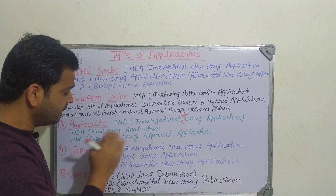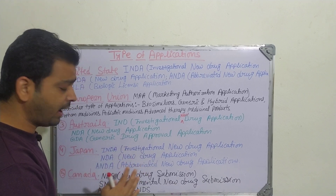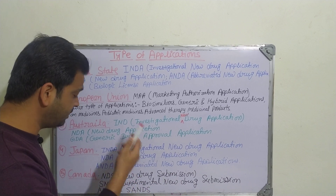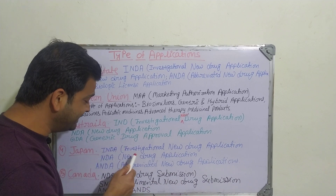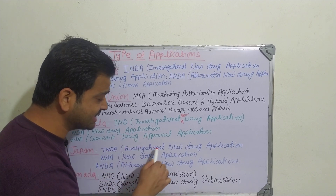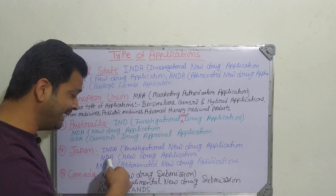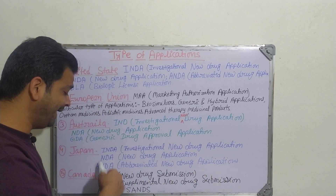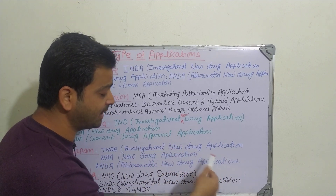The fourth country is Japan. Japan follows the same pattern as the US. It has the INDA — Investigational New Drug Application, then the NDA — New Drug Application, and then the ANDA — Abbreviated New Drug Application, also referred to as the Generic New Drug Application.